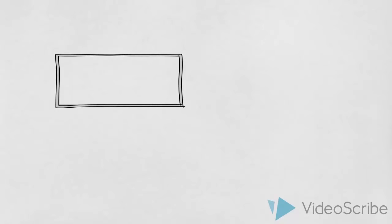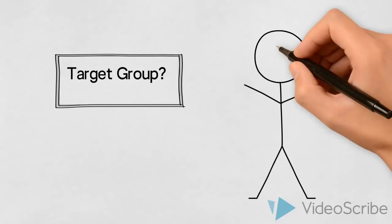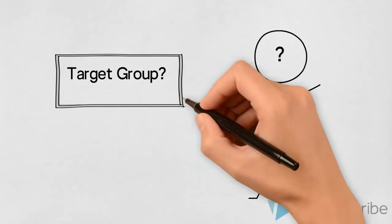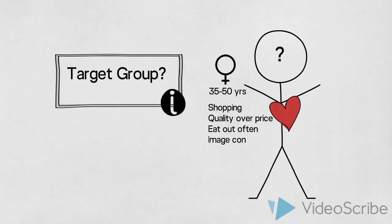Another core element in planning a successful integrated marketing campaign is knowledge about the chosen target group — we need to know who they are and what makes them tick. The French Cafe's chosen primary target group is 35 to 50 year old women who are out shopping with their girlfriends. They choose quality over price, they eat out often, and although they will never admit to it, it is important to them that they are seen in the right places. This information is also valuable for detailed planning regarding choice of specific media, timings, and the creation of the actual messages.